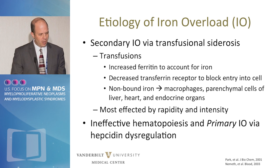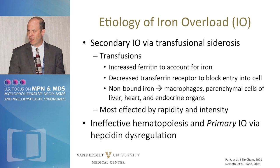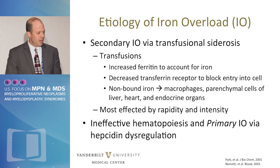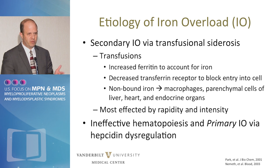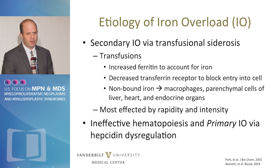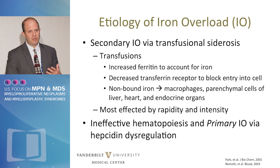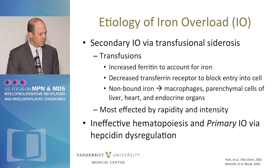Iron overload — we mostly think of transfusion siderosis, secondary iron overload. Increased ferritin accounts for the iron, the decreased transferrin receptor blocking entry into cells, and the non-bound iron is then engulfed through macrophages and parenchymal cells of the target organs — the three most common being liver, heart, and endocrine organs.